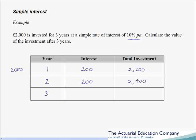Same thing for the final year — interest is not earned on interest, so the 10% is of the original £2000. And so our final investment after three years is £2600.